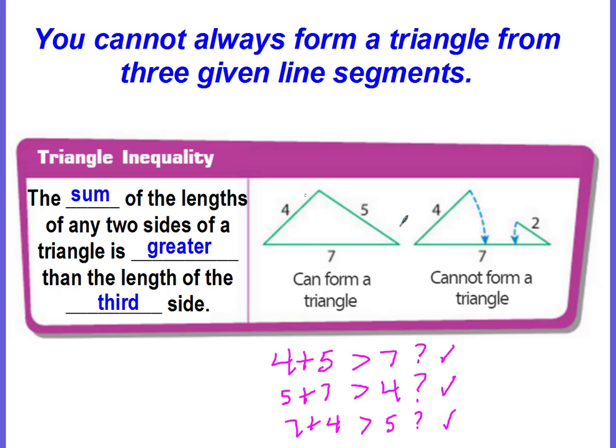Let's try the other example. We have 4 plus 2. Is that greater than the third side of 7? Well, 4 plus 2 is 6, and 6 is not greater than 7. Because it's not greater than 7, we can stop right there. This will not form a triangle. One of the sides will be too short and it won't reach the other side. And that's all there is to it.